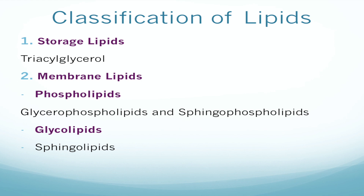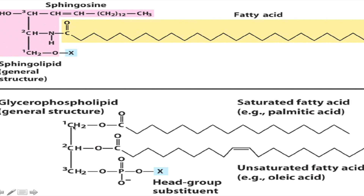Lipids in our body can be classified into storage lipids and membrane lipids. The most important storage lipid is triacylglycerol. Membrane lipids include phospholipids and glycolipids. Phospholipids are further classified into glycerophospholipids and sphingophospholipids. Glycerophospholipids have a glycerol backbone with a fatty acid attached to the first and second carbons, and a phosphate with a functional group on the third carbon. The most abundant glycerophospholipid in our membrane is lecithin, which is important for methylation reactions and acetylcholine synthesis.